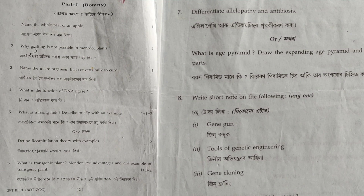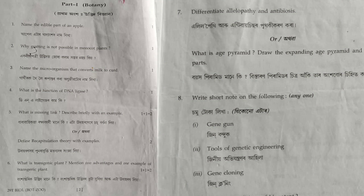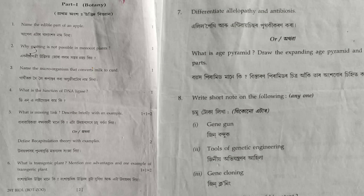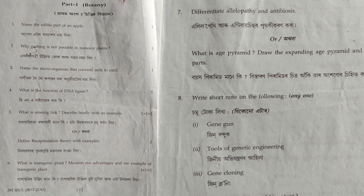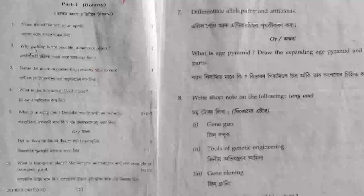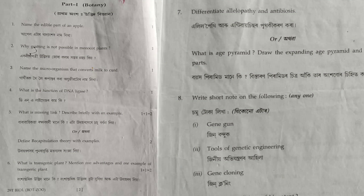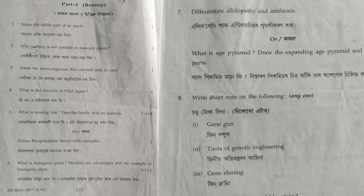The gene gun transfers genes in the form of tiny bullets, which are forcefully triggered into the host cell. Next, the tools of genetic engineering: enzymes are entirely involved in genetic engineering, including restriction enzymes, joining enzymes, and lysing enzymes.